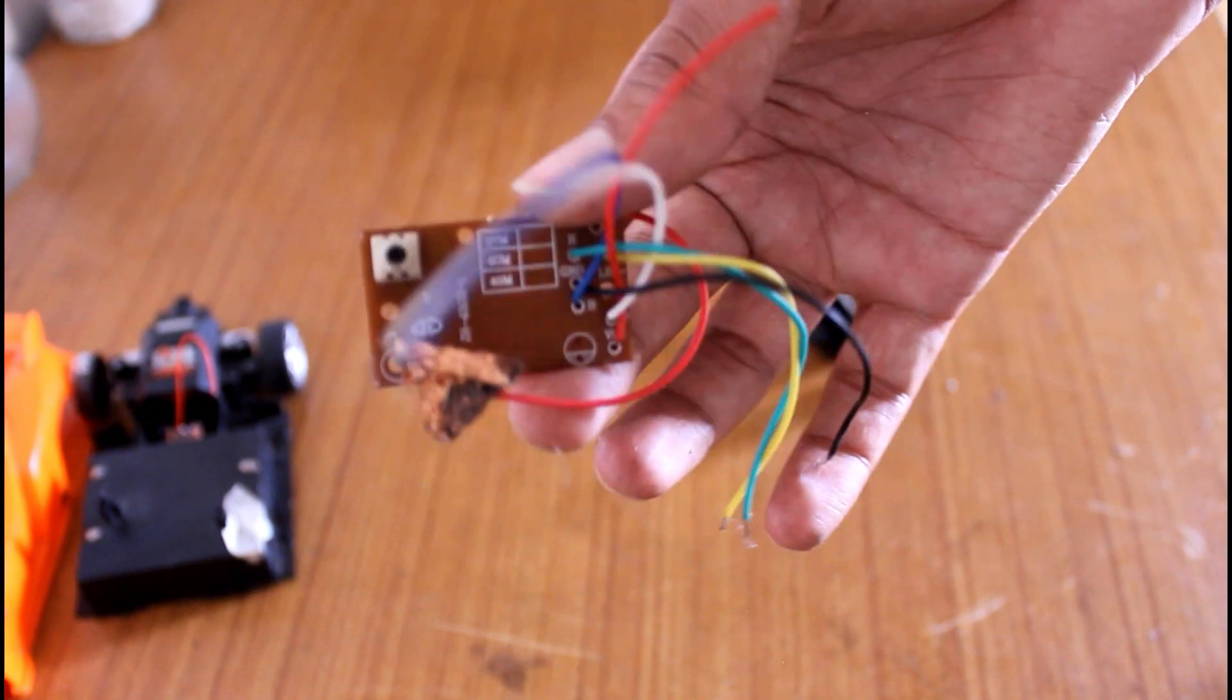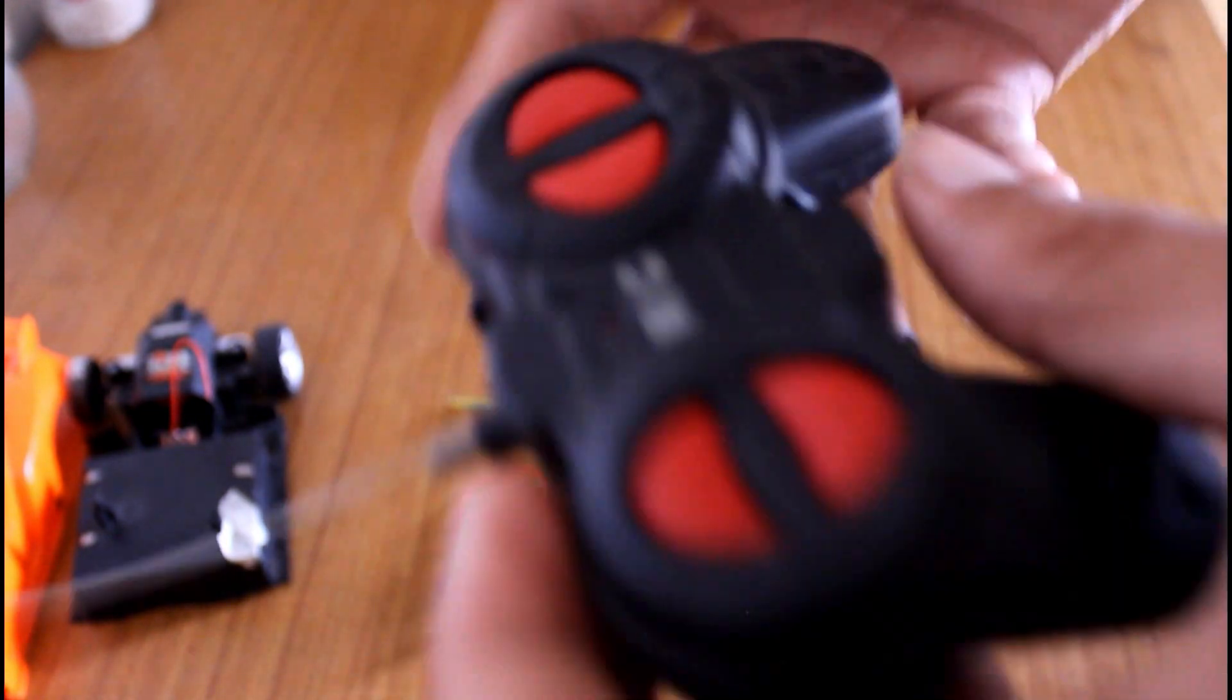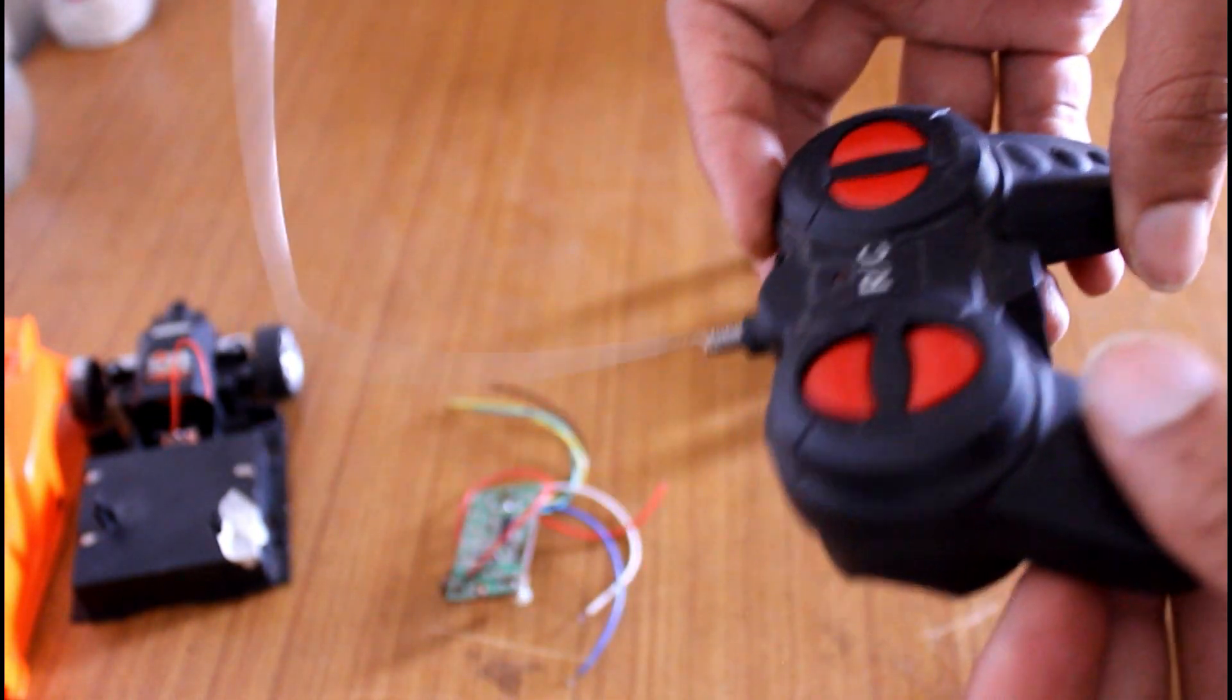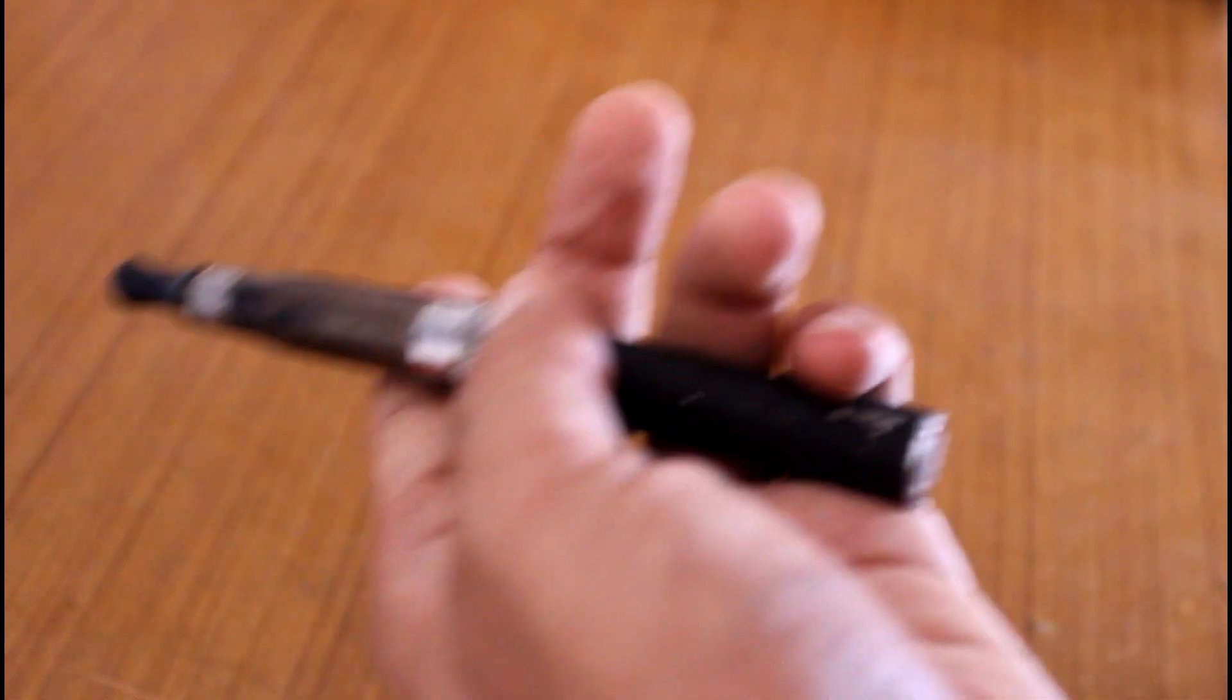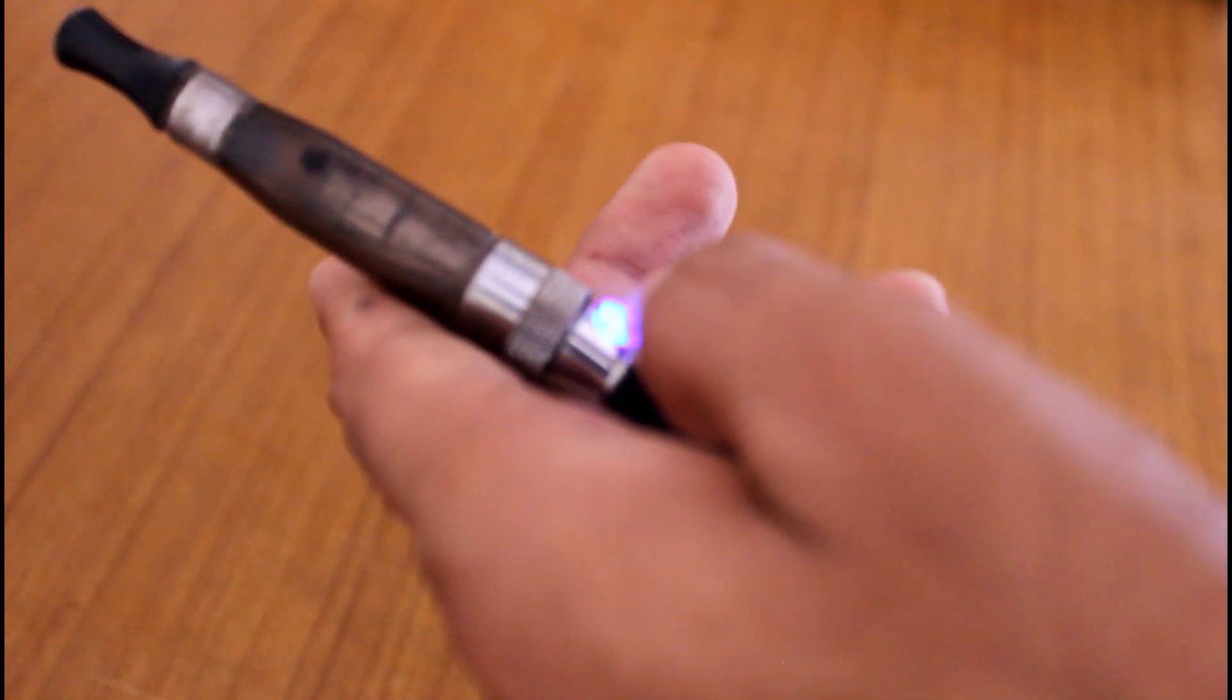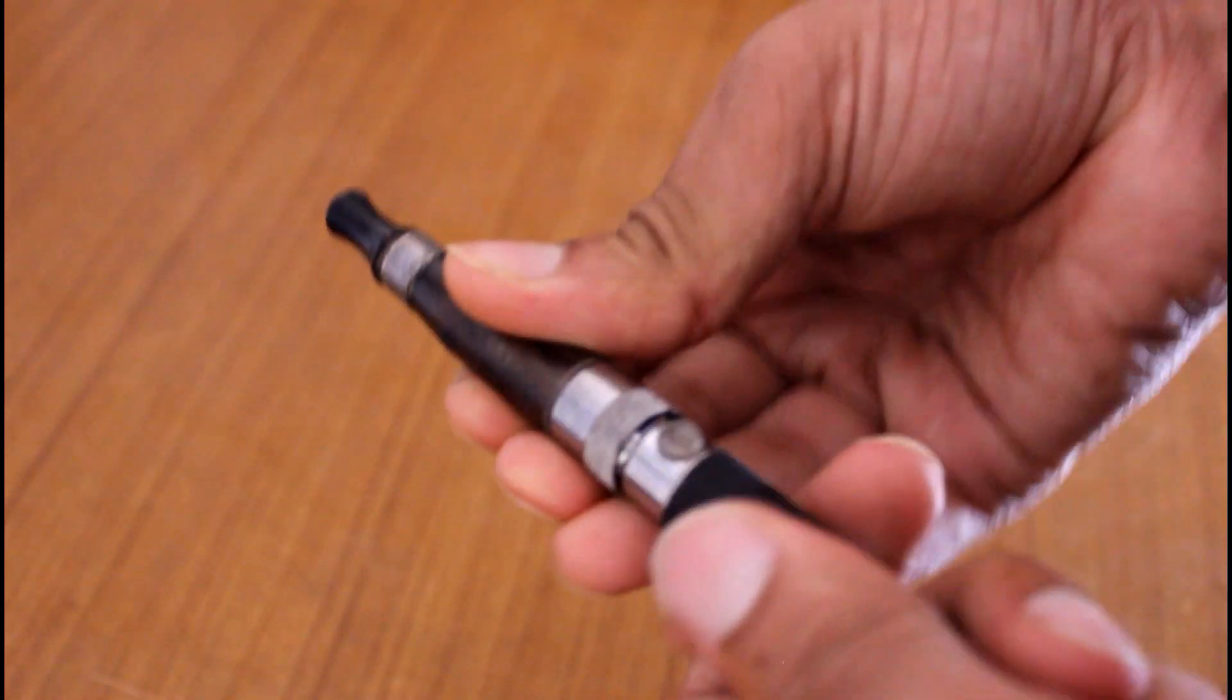So here we have this receiver circuit and we are going to operate this with this remote. And I am going to use a vaporizer from this vape as an igniter of the cannon.